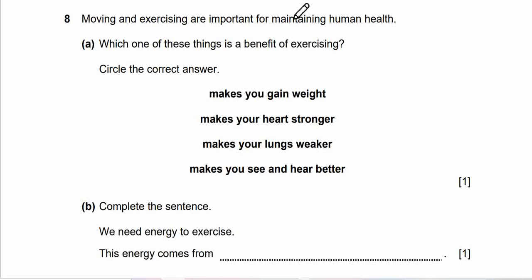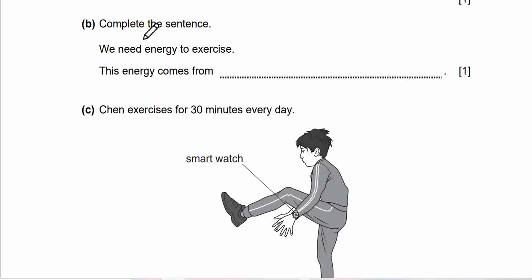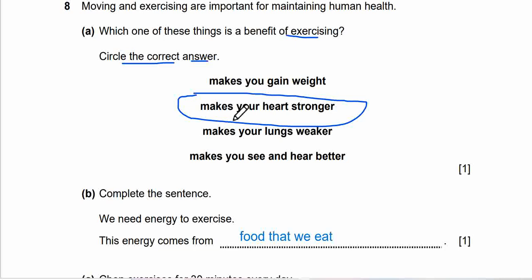Question 8. Moving and exercising are important for maintaining human health. Question 8A. Which one of these things is a benefit of exercising? Circle the correct answer. Makes you gain weight, makes your heart stronger, makes your lungs weaker, makes you see and hear better. Get your answer. Definitely the correct answer is makes your heart stronger. Let's move on to 8B. Question 8B says complete the sentence. We need energy to exercise. This energy comes from? I believe you know the answer. So it comes from the food that we eat. Definitely. Then we go through respiration to produce energy for our body.